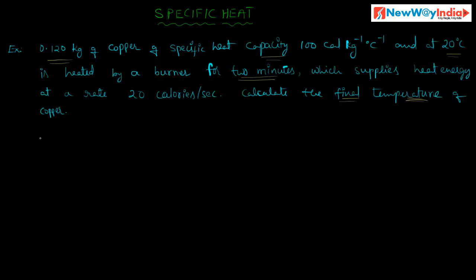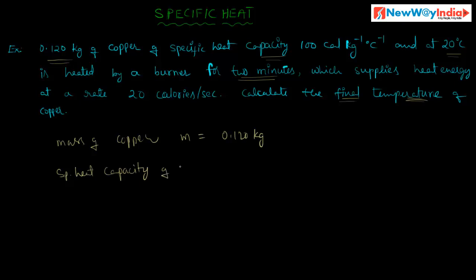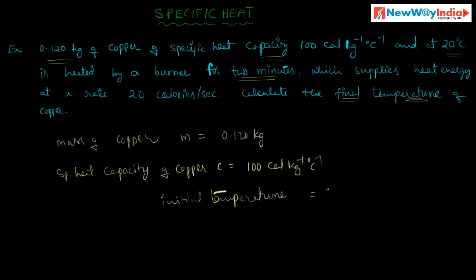Let us see the given data. Mass of the copper, M is equal to 0.120 kg. Specific heat capacity of copper, C is equal to 100 calories per kilogram per degree centigrade. The initial temperature is 20 degree centigrade. You have to find the final temperature.